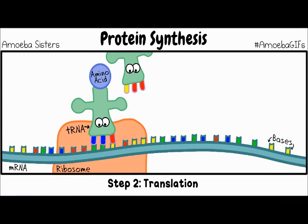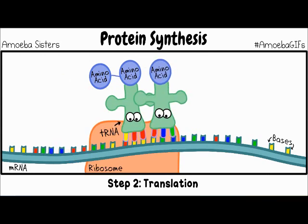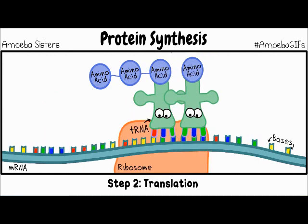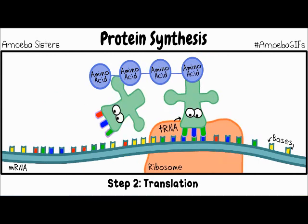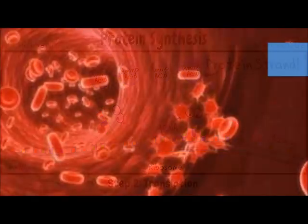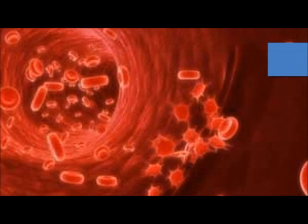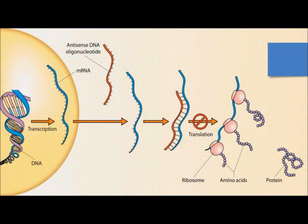Proteins are assembled based on the instructions carried by messenger RNA from DNA. For this reason, messenger RNA — in this case called the sense gene — is the target of antisense drug therapy. After injection, the antisense drug usually consists of 15 to 20 nucleotides which are complementary to their targeted mRNA. The drug moves into the bloodstream and travels throughout the body to reach the cells.